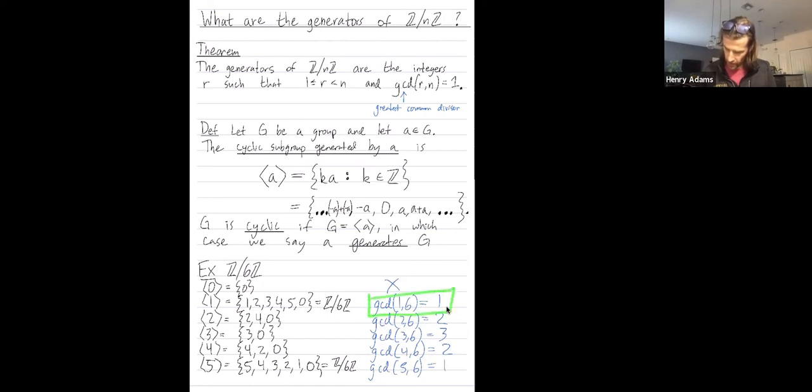So I can look here. Five and six were the only numbers r such that when I took these GCDs, I got one. And that's how I could have known in advance that one and five were going to generate this group. But the other elements weren't.